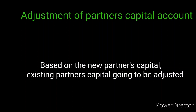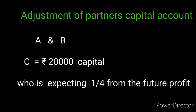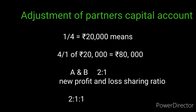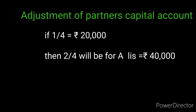Adjustment of partners' capital account: based on the new partner's capital, existing partners' capital is adjusted — this is called the adjustment of capital method. For example, A, B, C are partners; A and B are existing, C is new, bringing ₹20,000 and expecting 1/4 of future profit. So total firm capital = ₹80,000. A and B share in 2:1 ratio, making the new ratio 2:1:1. A should maintain double C's capital (₹40,000). If A has ₹45,000, he can withdraw ₹5,000; if he has only ₹35,000, he must bring in ₹5,000.